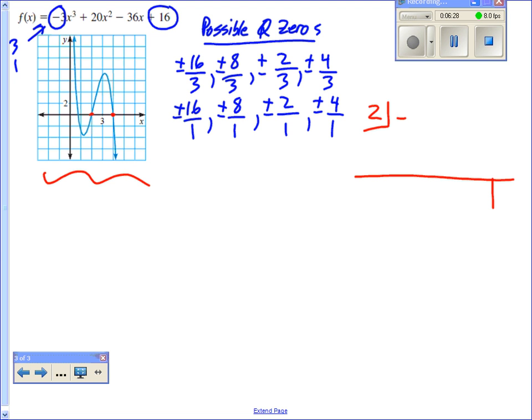20x squared, negative 36x plus 16, all right? When I do this, I should get a remainder of 0 if 2 is truly 0. Okay. Hey, it works, all right? And it leaves us with negative 3x squared plus 14x minus 8.